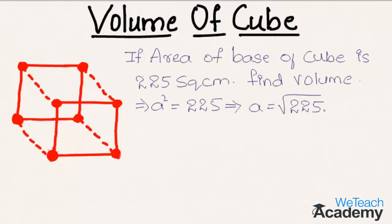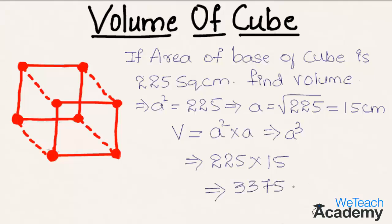Then coming to the volume, we already know that the volume of a cube is given by the formula a square into a, that is a cube. Substituting the value of area and height in the formula we get 225 into a, that is 15. So we get 225 into 15, and by multiplying we get the product as 3375 centimeters cube, which is the volume of the cube.